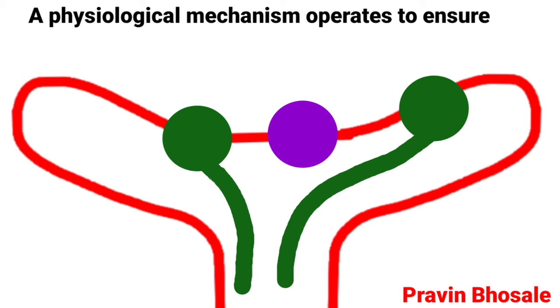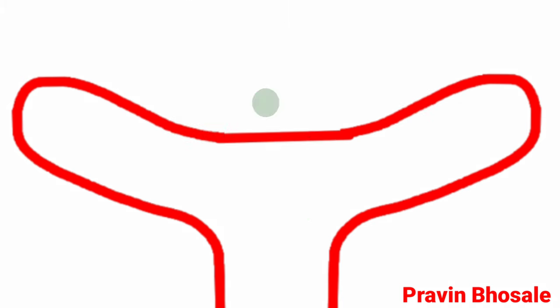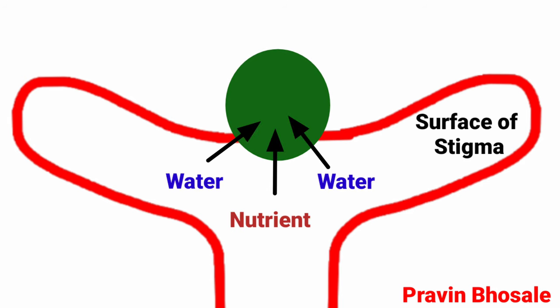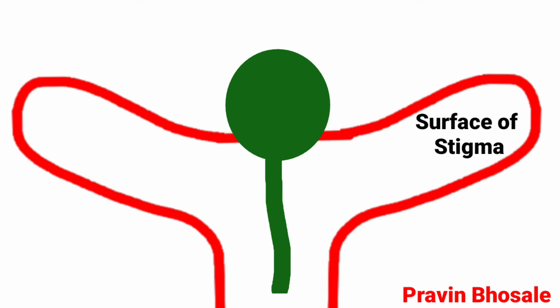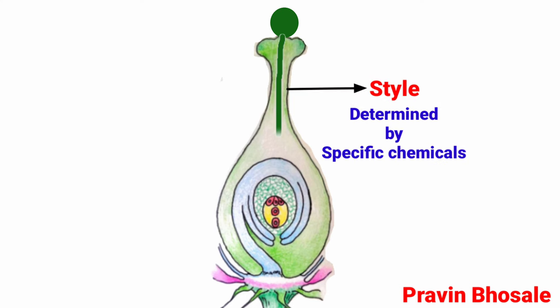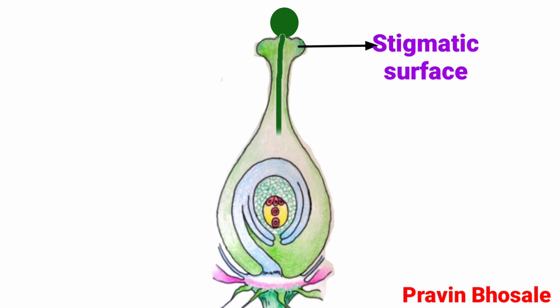The compatible pollen absorbs water and nutrients from the surface of the stigma, germinates, and produces a pollen tube. Its growth through the style is determined by specific chemicals.